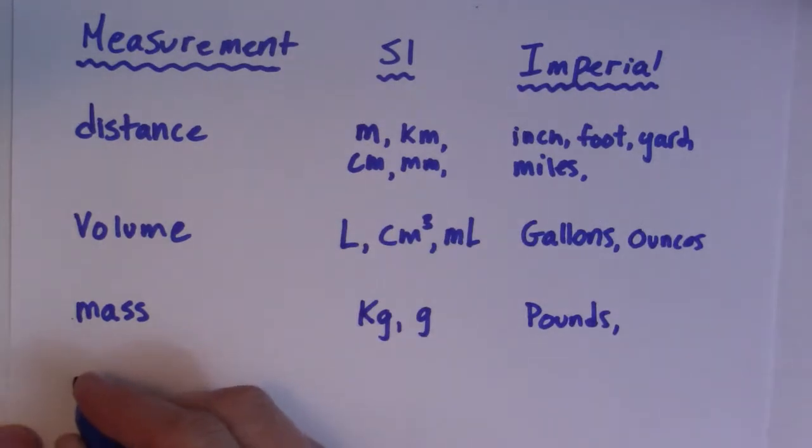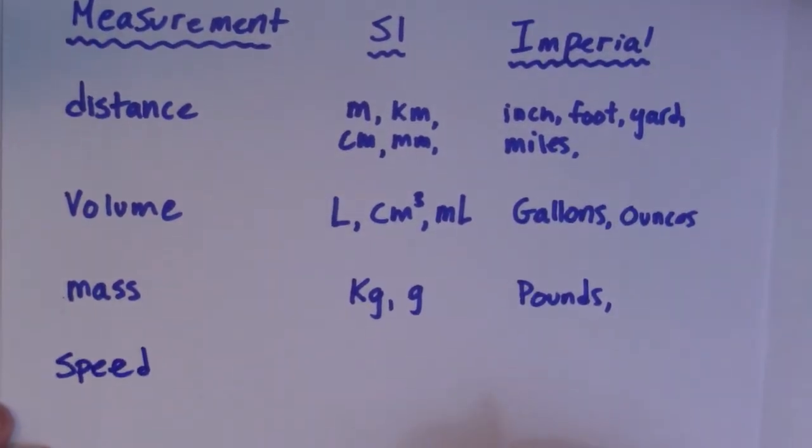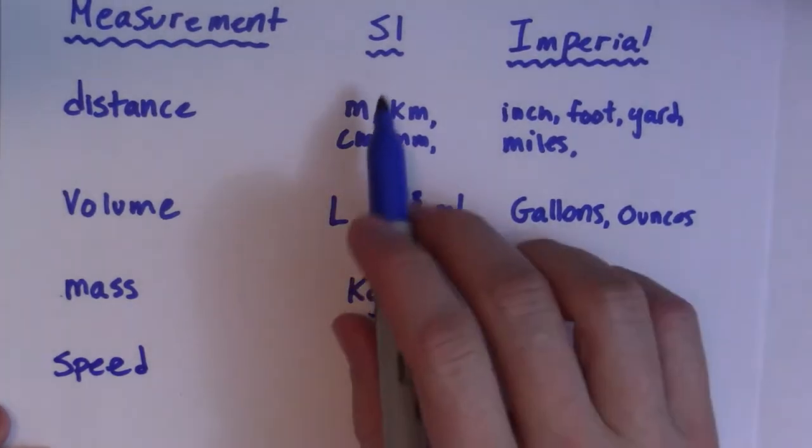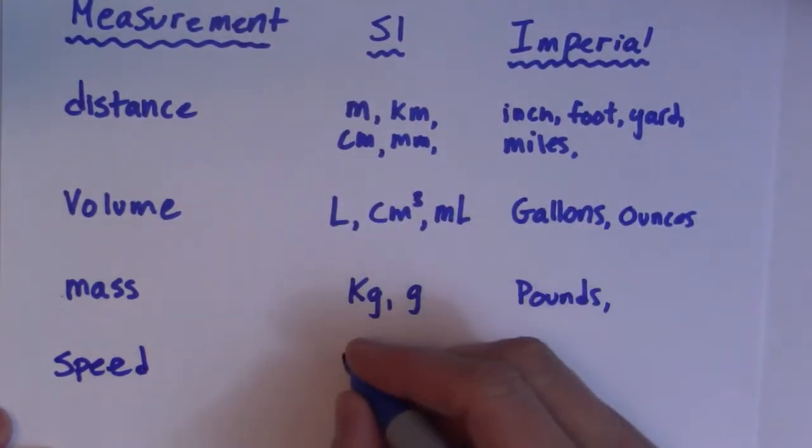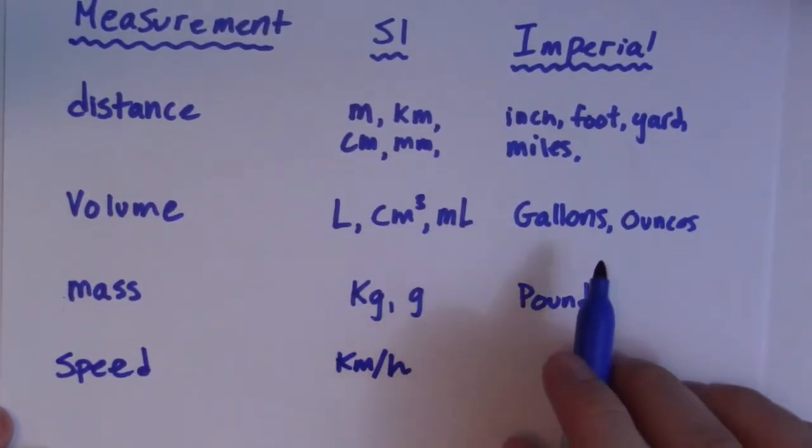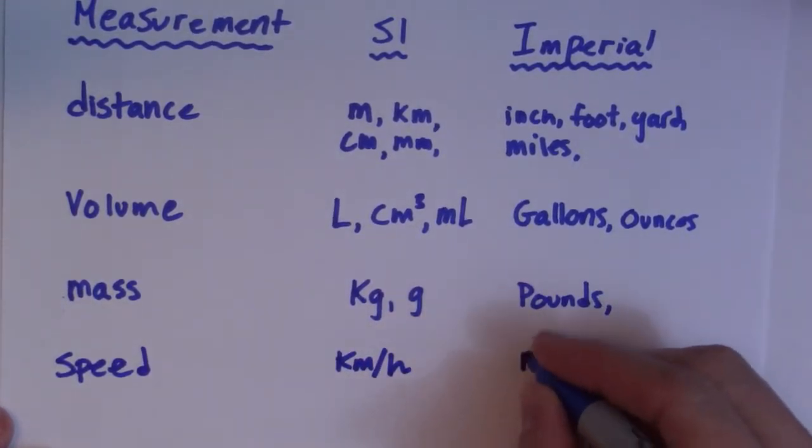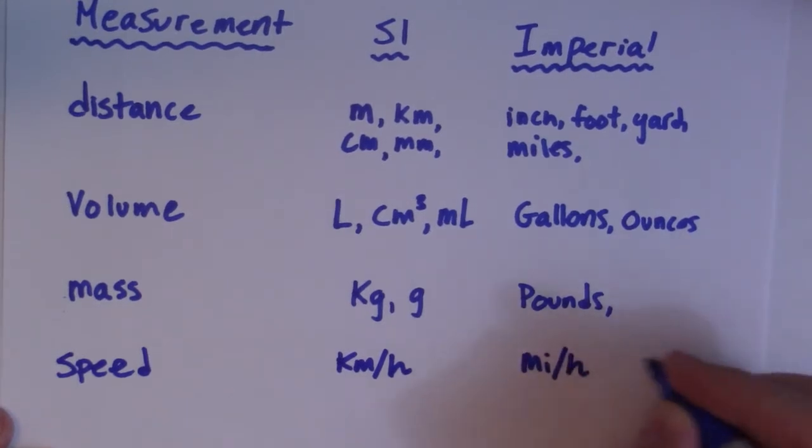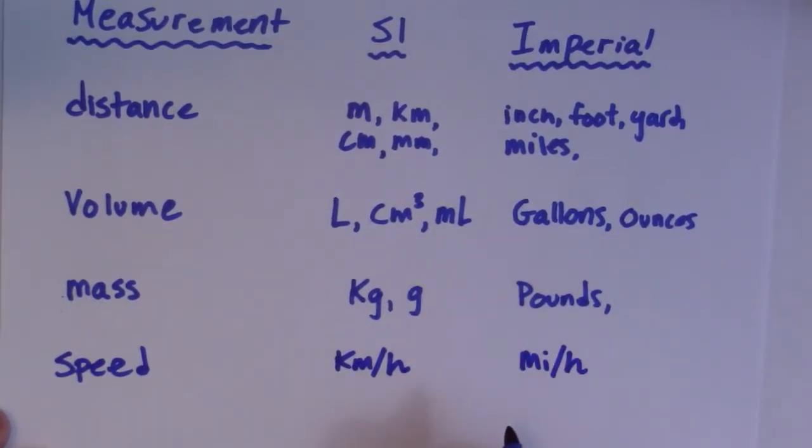Let's go another measurement that we often think about, which will be speed, how fast something is going. Generally in Canada, our speed limits are given in kilometers per hour. In imperial, if you're traveling within the United States, they're usually given in miles per hour.